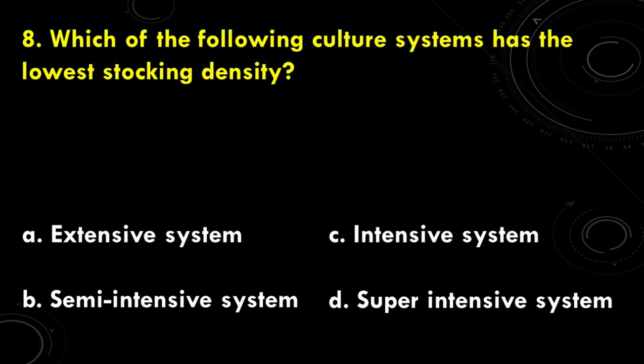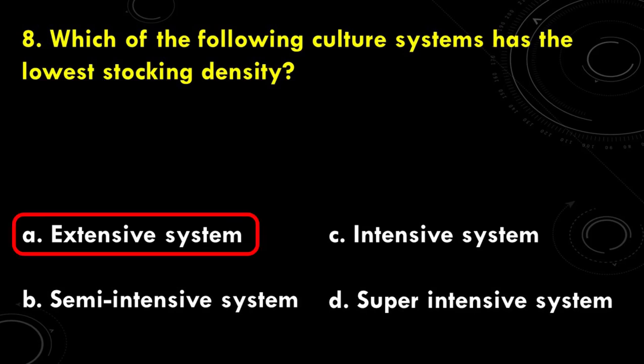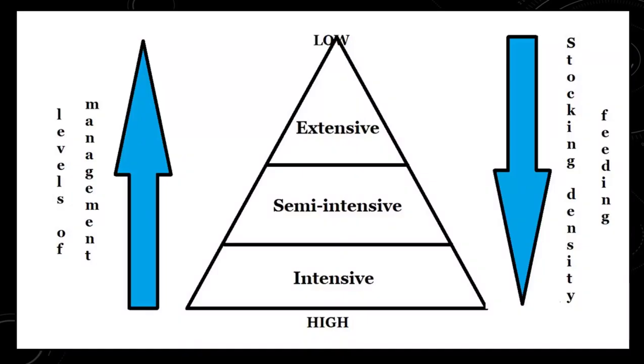Which of the following culture systems has the lowest stocking density? The options are: A. Extensive system, B. Semi-intensive system, C. Intensive system, D. Super-intensive system. There is a direct relationship between the level of management, stocking density, and feeding. When stocking densities are lowered, so too are the level of management and feeding schemes. If you intend to increase stocking density, you also have to increase feeding inputs and level of management.